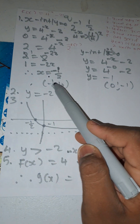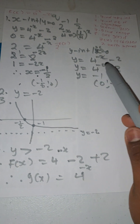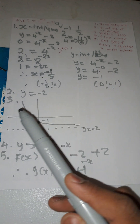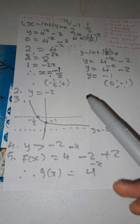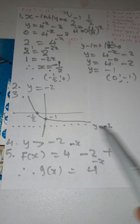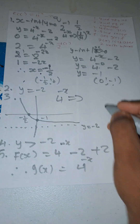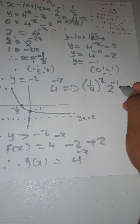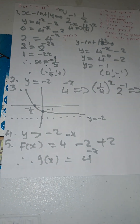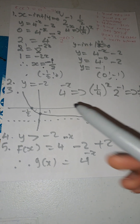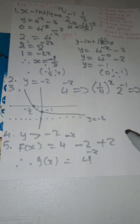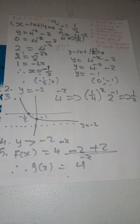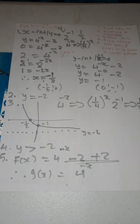Therefore g(x) = 4^(-x). To summarize: x-intercept found by letting y = 0 giving x = -1/2; y-intercept found by letting x = 0 giving y = -1. The asymptote is y = -2. Sketch by drawing the asymptote, plotting the points, and drawing the curve. Range is y > -2. Shifting two units upward gives g(x) = 4^(-x). That's how you do exponential graphs!